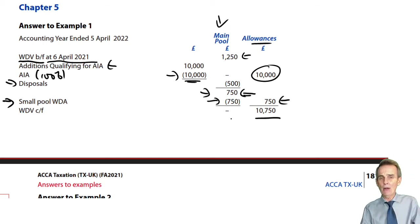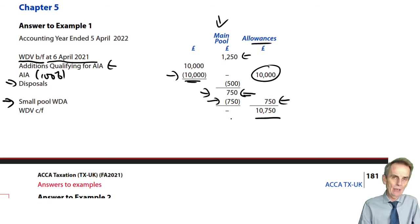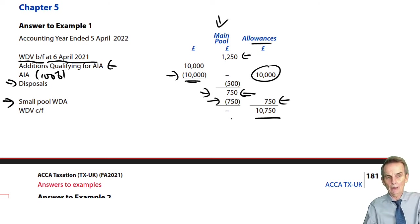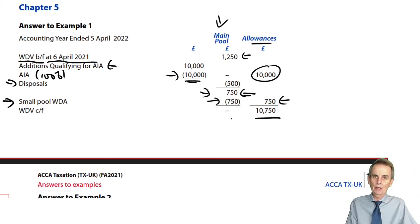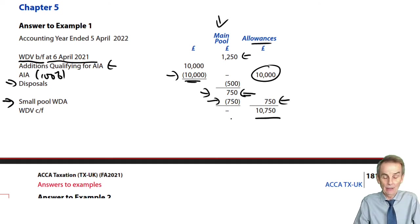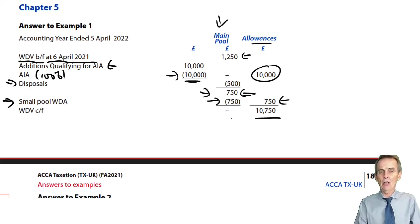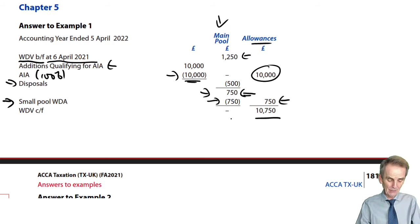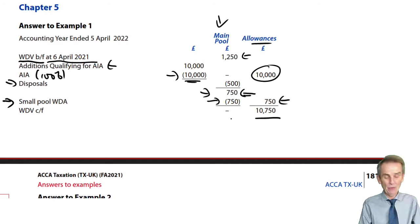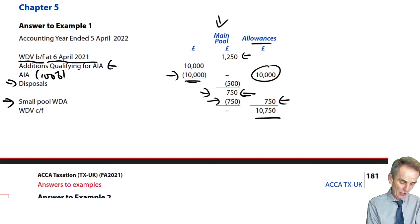That would leave nil residue in the main pool. It would then be on to the next accounting period, again seeing what expenditure was incurred and whether anything went into the main pool — like a lower CO2 emission car not exceeding 50 grams per kilometre — upon which we'd get our 18% writing down allowance. That is rather more likely something you'd see in a Section A objective testing question.